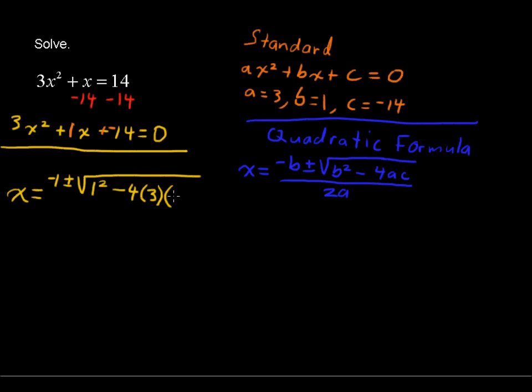times c. c is negative 14, all over 2 times a, which again a is 3.